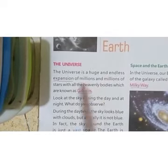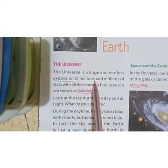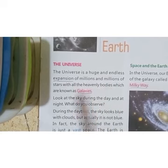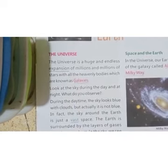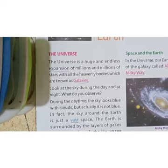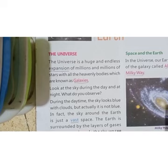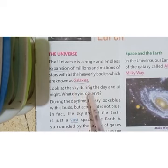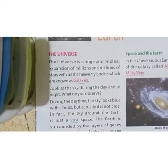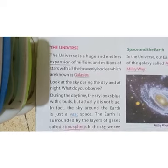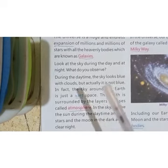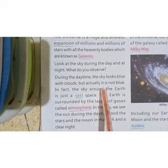The universe is a huge and endless expansion of millions and millions of stars with all the heavenly bodies, which are known as galaxies. The universe contains everything — the earth, sky, heavenly bodies like stars, earth, moon, celestial bodies, akash ganga (Milky Way) — this is all about galaxies. When we look at the sky during the day and at night, during daytime we see the sun, and at night we see the moon and stars.